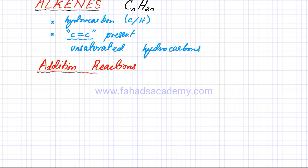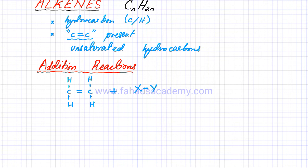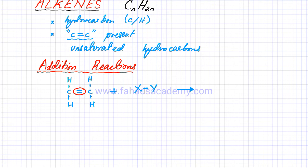Addition reactions — I'm going to briefly describe what the mechanism is going to be. If you have an alkene, let's say ethene, it's going to have two carbon atoms with double bonds, and each carbon atom is going to be making four bonds. It's going to react with a particular molecule — let's say a hypothetical molecule called XY, which means it has one X atom bonded to one atom of Y. The double bond over here is going to be converted into a single bond.